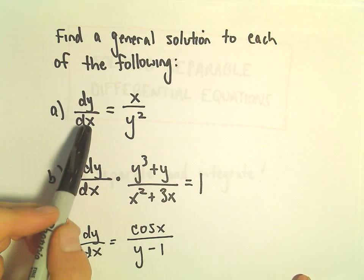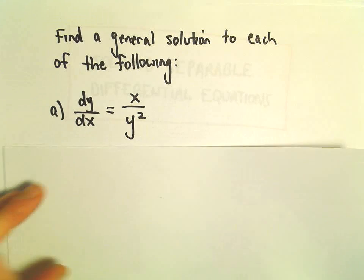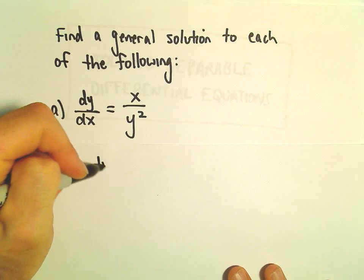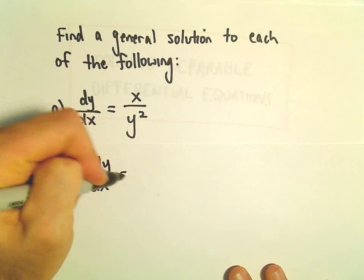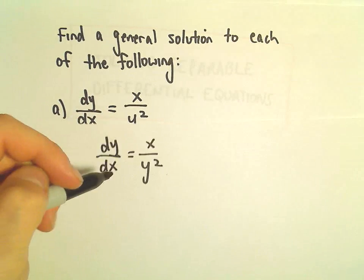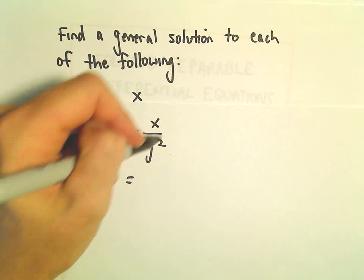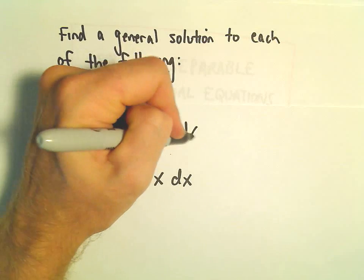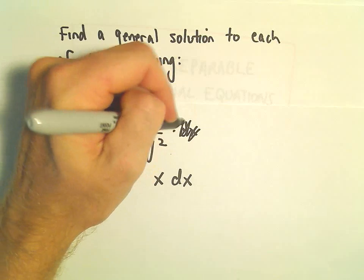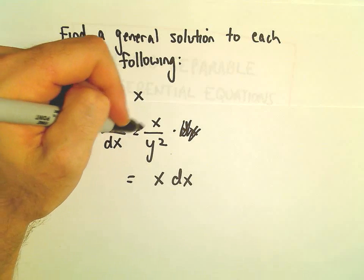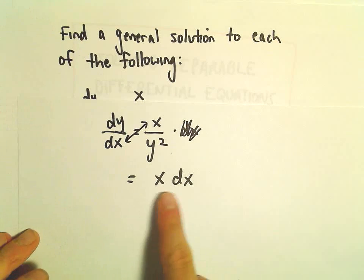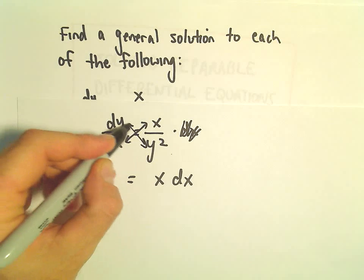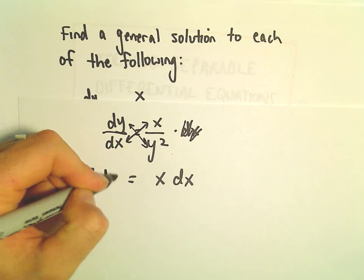We want the dy to be in the numerator and we want the dx to be in the numerator as well. So for part A, we've got dy over dx equals x over y squared. What we're going to do is multiply the dx over to the right side — we can multiply both sides by dx, basically cross-multiplying. So we get x times dx on the right side, and y squared dy on the left.